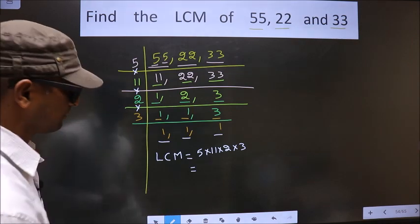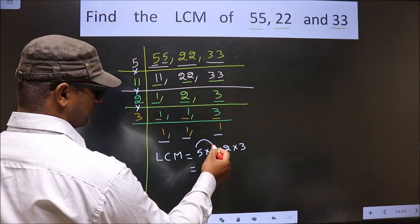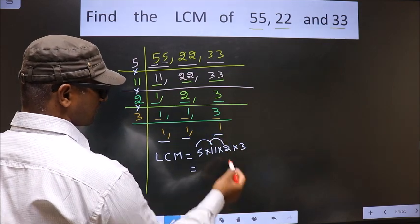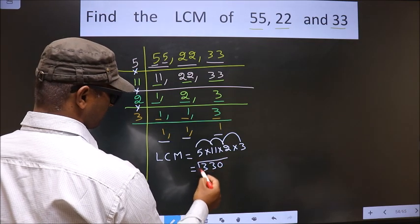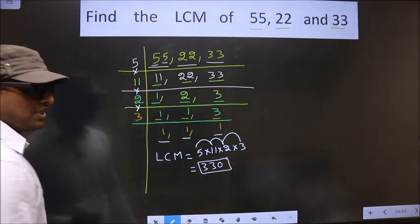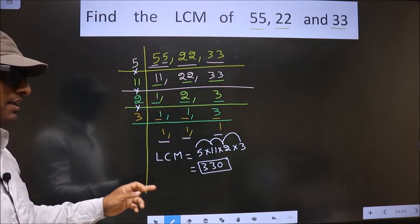So let us multiply. 5 into 11, 55, into 2, 110, into 3. We get 330. So this is our LCM. Am I clear?